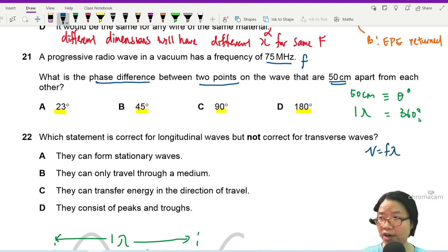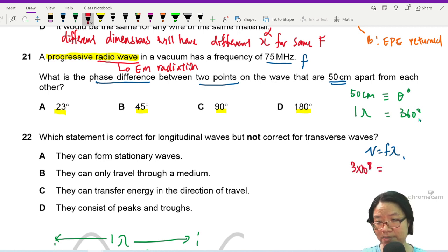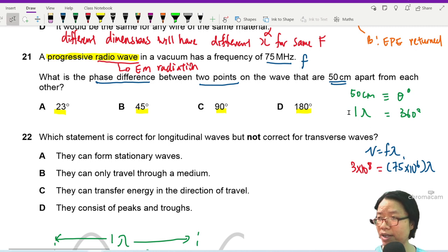We need to find what the value of lambda is. I can use V equals F lambda to do this. Your speed here, you may be thinking, I don't have the speed of radio wave. You do. This is electromagnetic radiation. Because it's electromagnetic wave, the speed is 3 times 10 to the power of 8. You can find this in your table of constants. Then you can substitute 75 megahertz and find lambda.